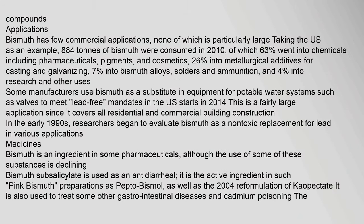Bismuth has few commercial applications, none of which is particularly large. Taking the US as an example, 884 tons of bismuth were consumed in 2010, of which 63% went into chemicals including pharmaceuticals, pigments, and cosmetics; 26% into metallurgical additives for casting and galvanizing; 7% into bismuth alloys, solders, and ammunition; and 4% into research and other uses. Some manufacturers use bismuth as a substitute in equipment for potable water systems, such as valves, to meet 'lead-free' mandates in the US starting in 2014. In the early 1990s, researchers began to evaluate bismuth as a non-toxic replacement for lead in various applications.